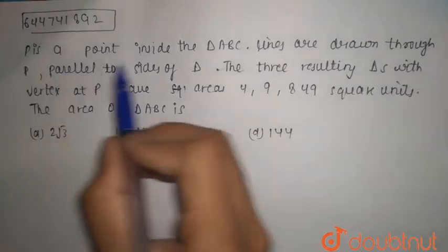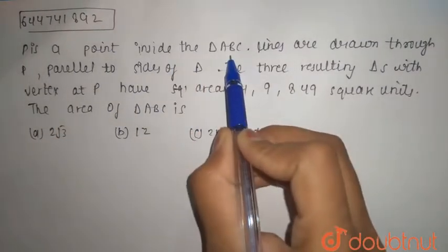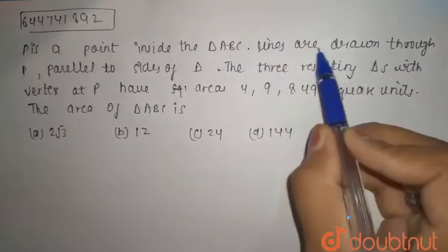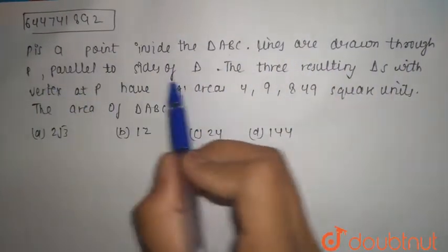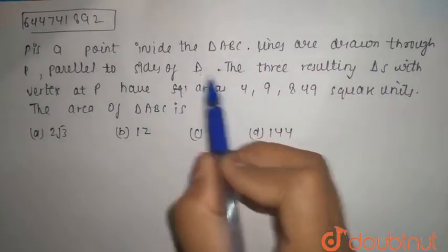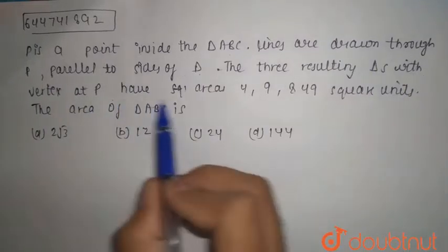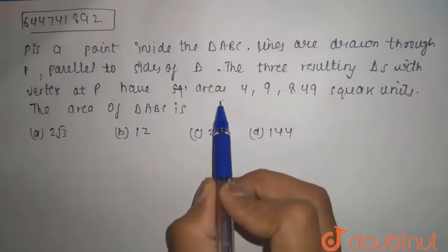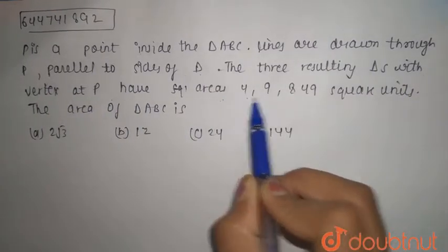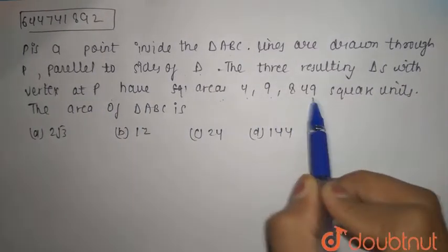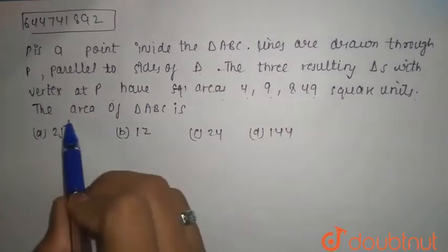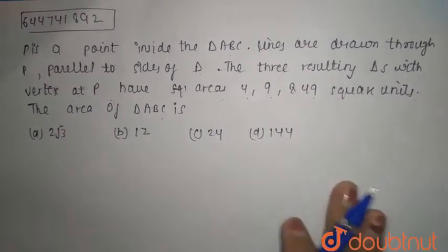P is a point inside triangle ABC. Lines are drawn through P parallel to the sides of the triangle. The three resulting triangles with vertex at P have areas 4, 9, and 49 square units. Find the area of triangle ABC.